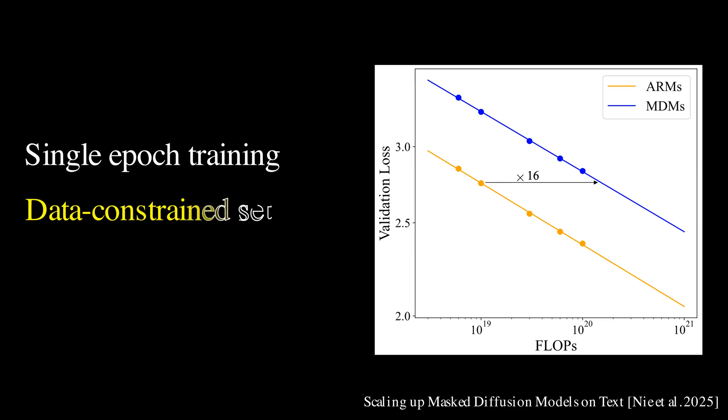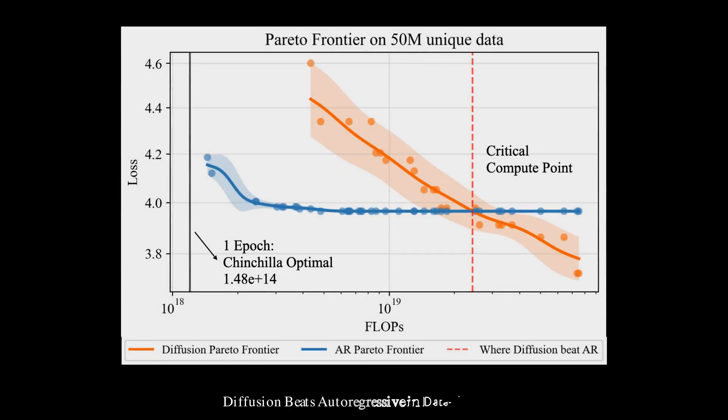However, in real-world scenarios, training often consists of multiple epochs over a limited dataset. It turns out mask diffusion models excel in data-limited scenarios. This plot shows the validation loss versus training compute in data constraint settings. Each point corresponds to a model trained to convergence, with the best validation loss achieved for a given compute budget, measured in flops, plotted on the y-axis. Initially, autoregressive models outperform diffusion models. However, as training continues with repeated passes over the limited dataset, that is, more epochs, autoregressive models quickly reach a plateau and begin to overfit. In contrast, mask diffusion models continue to improve with more compute, showing no signs of overfitting, and achieving better validation loss with increased training.